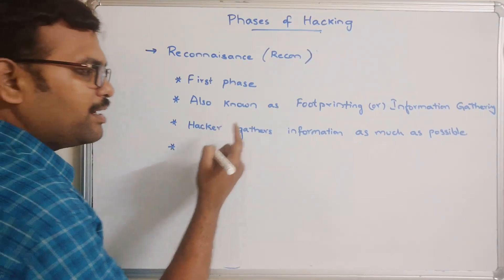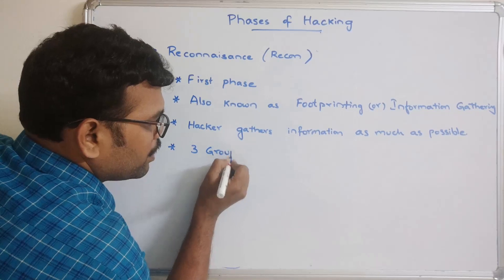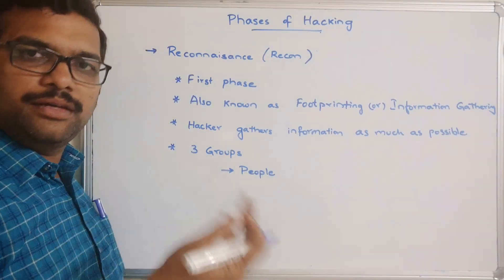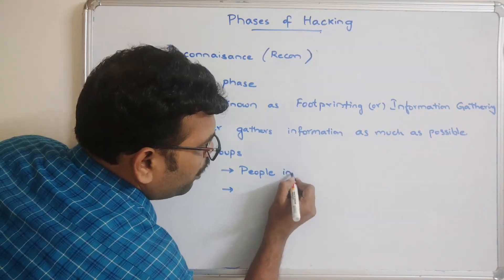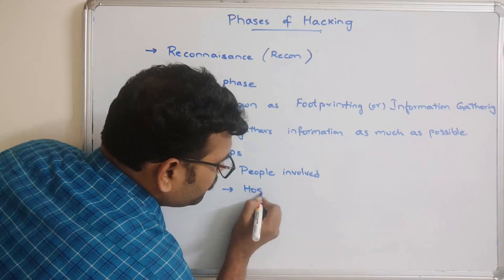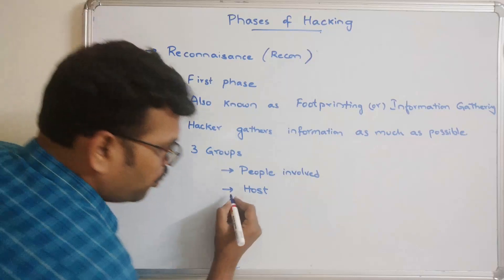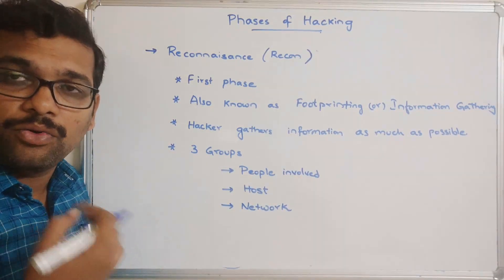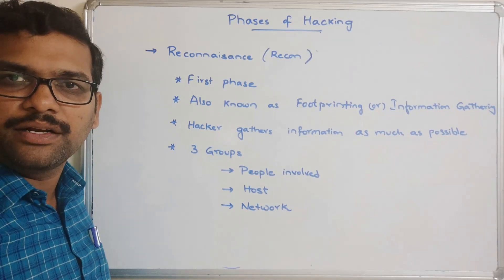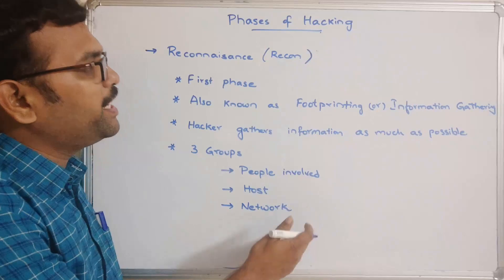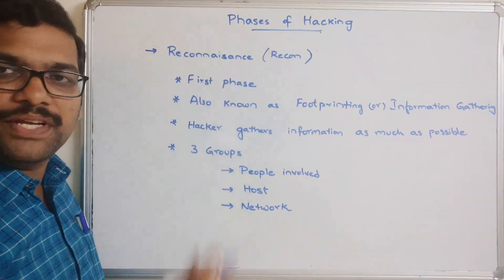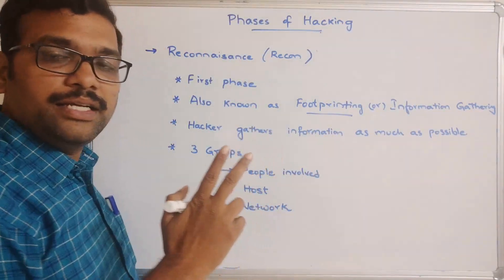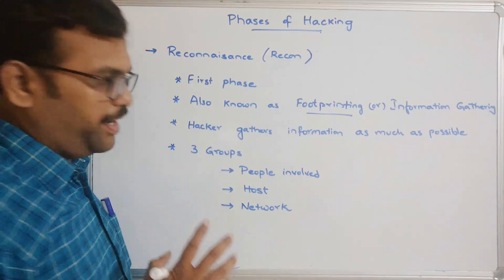The hacker mainly gathers information regarding three groups: the people involved in the organization, the host system being targeted, and the network — including routers, firewalls, and their configurations. Footprinting is further classified into two categories: active footprinting and passive footprinting.